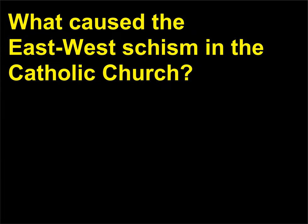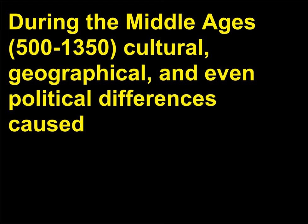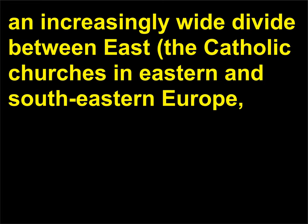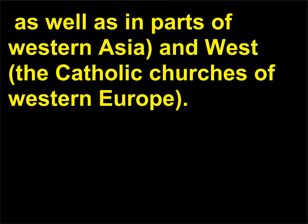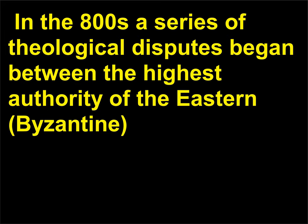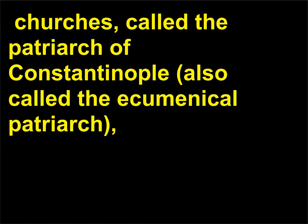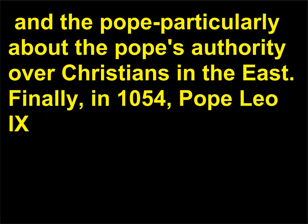What caused the East-West Schism in the Catholic Church? A lot of cultural, geographical, and even political differences caused an increasingly wide divide between East — the Catholic Churches in Eastern and Southeastern Europe as well as in parts of Western Asia — and West — the Catholic Churches of Western Europe. In the 800s a series of theological disputes began between the highest authority of the Eastern, or Byzantine, Churches, called the Patriarch of Constantinople, also called the Ecumenical Patriarch,